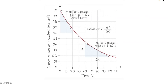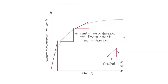0.4 moles of gas was released in 20 seconds. You simply divide the moles by the time — 0.4 divided by 20. Those numbers can tell us how the rate of reaction has changed. If I want to see how the rate changes without having to calculate it, I can still see that by using the gradient.